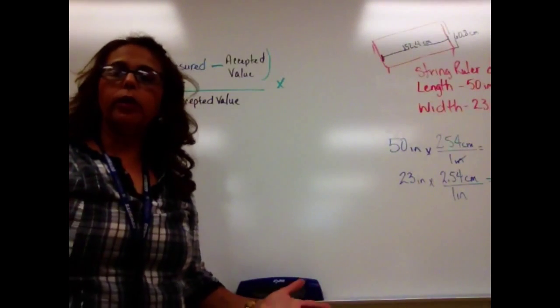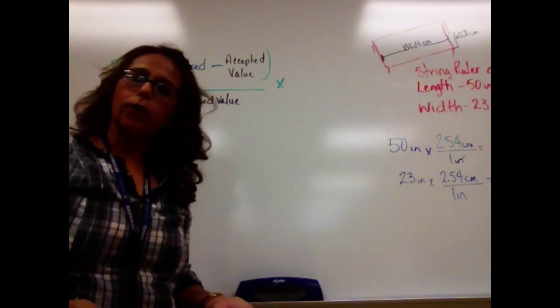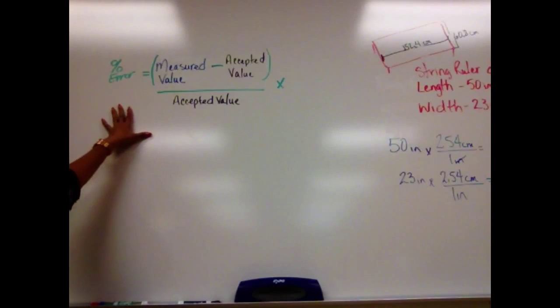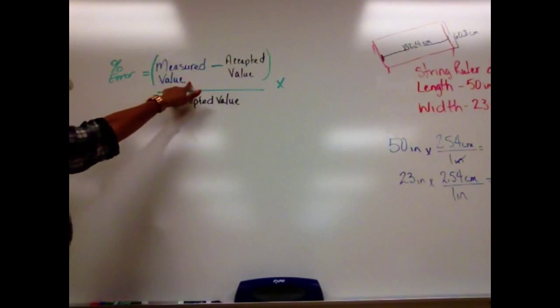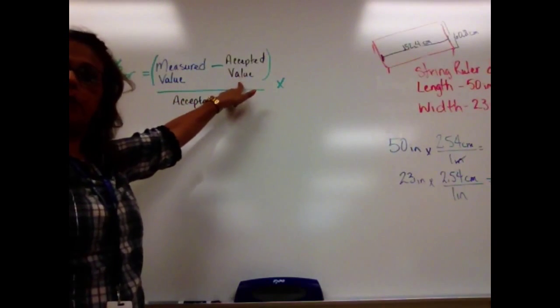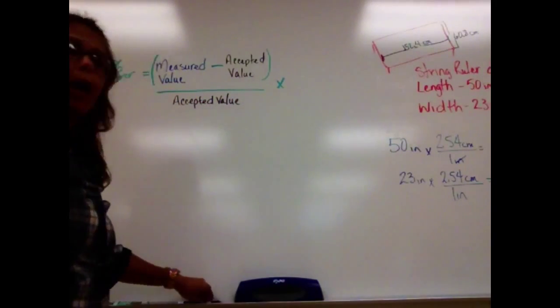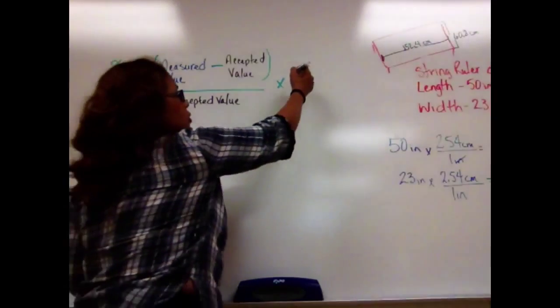So we're going to be using the percent error calculation. Remember, percent error is equal to measured value minus accepted value divided by your accepted value multiplied by 100 because it's a percent just like your grades are.